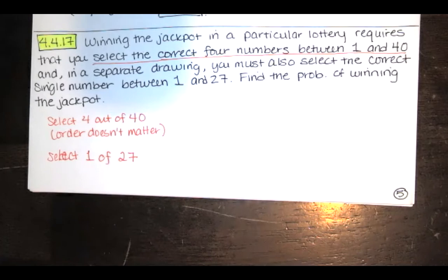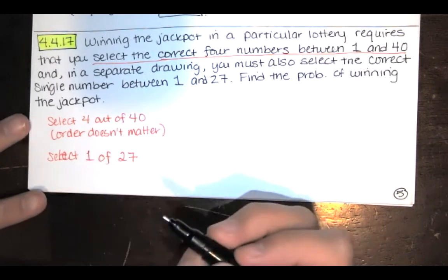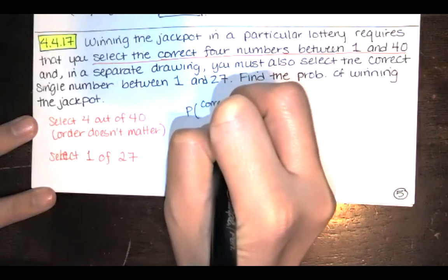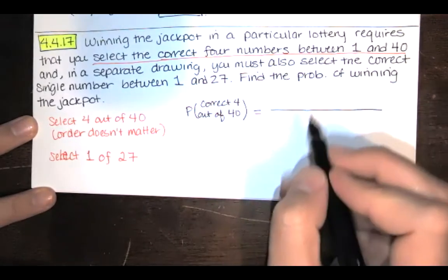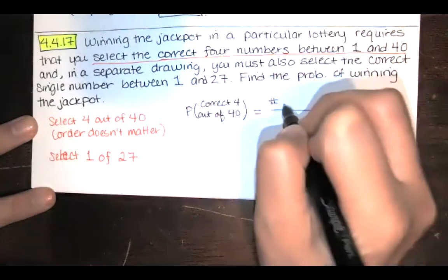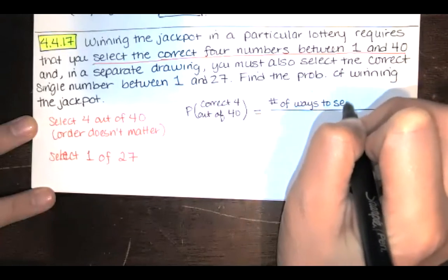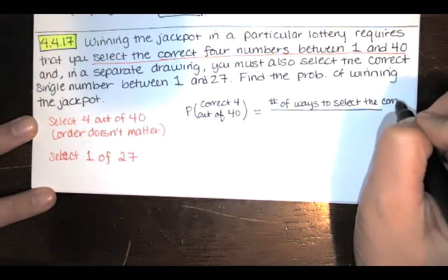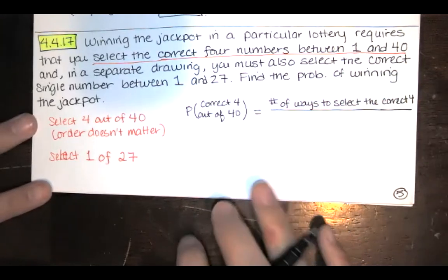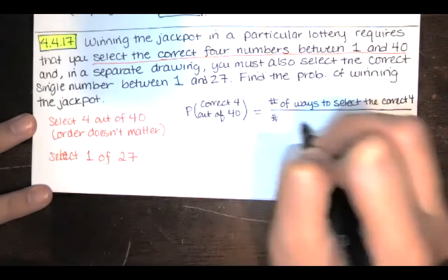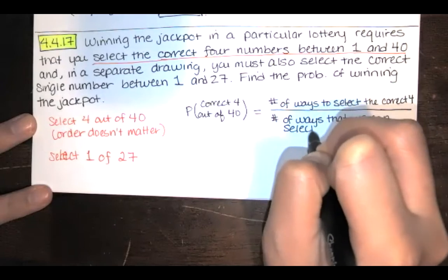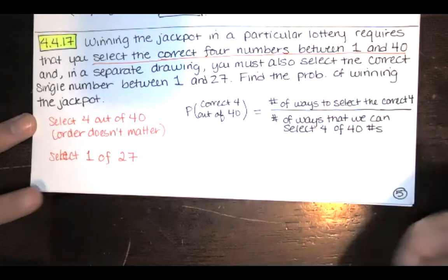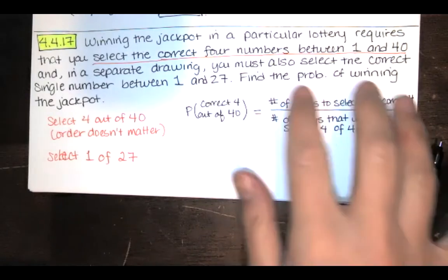Find the probability of winning the jackpot. So first we need to think about the probability of selecting the correct four numbers out of 40 numbers, given that order doesn't matter. In the numerator we need the number of ways to select the correct four numbers, and then we have to divide by the total number of ways that we could select four out of 40 numbers.